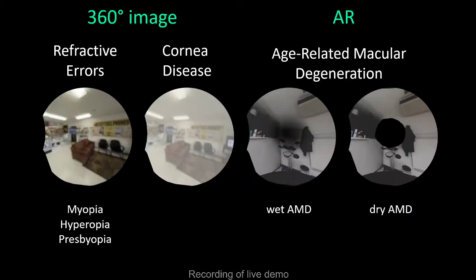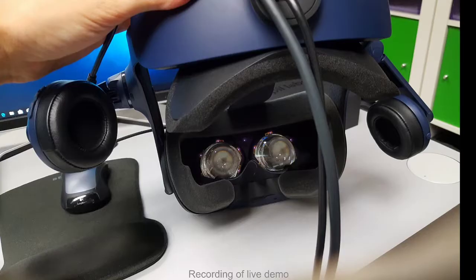To aid in understanding what people with visual impairments experience, we demonstrate a set of medically informed simulations in eye-tracked XR of several common eye conditions, namely refractive errors, corneal disease, and age-related macular degeneration. We use an HTC Vive Pro headset with a Pupil Labs EyeTracker add-on, which we use to track a user's pupils and steer gaze-dependent effects accordingly.